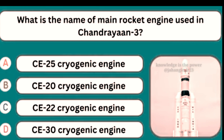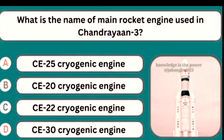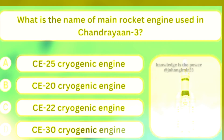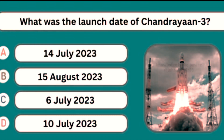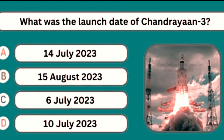What is the name of the main rocket engine used in Chandrayaan-3? Option C — CE-20. What was the launch date of Chandrayaan-3? Option A — 14 July 2023.